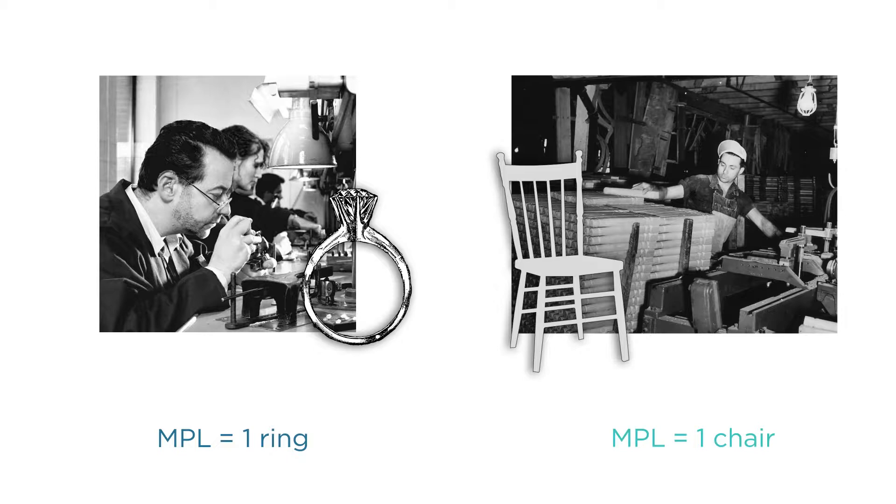If the marginal product of labor for each firm is one, does that mean the marginal benefit of labor to the firm is the same in both cases? Of course not. The worker who spent the additional hour making one more diamond ring has made his firm a lot more money than the worker making one more chair.